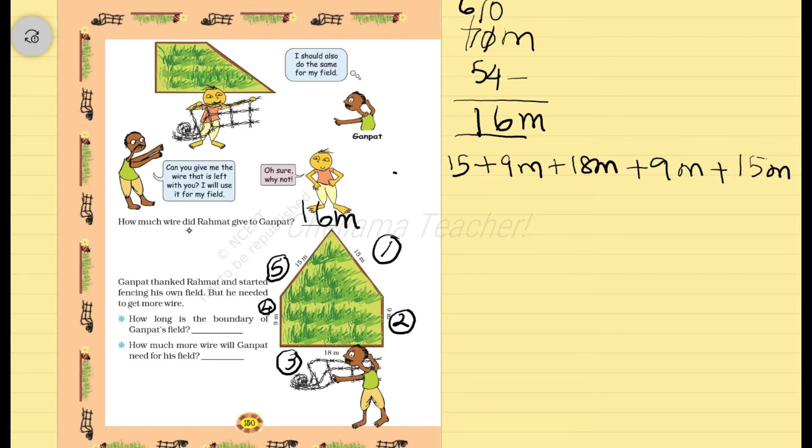Now we have to add up the numbers. Write like this and add. 18, 9 again, then 15.